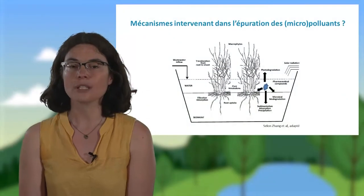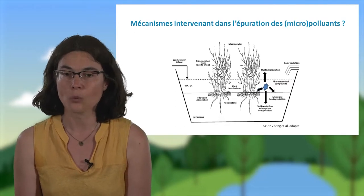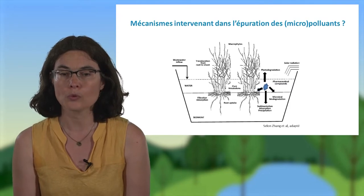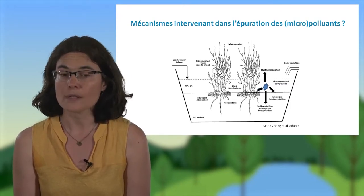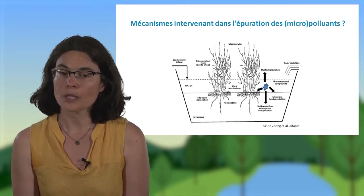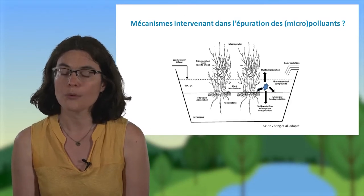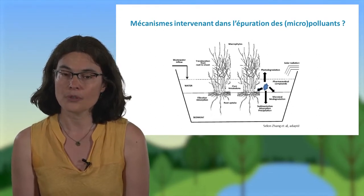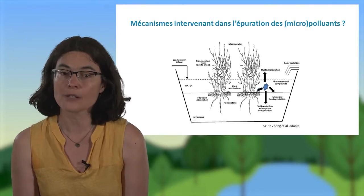Malgré tout, il reste encore certaines zones d'ombre concernant le fonctionnement de ces zones de rejet végétalisées. Par exemple, les mécanismes intervenant dans l'élimination des polluants, et des micro-polluants particulièrement, sont assez peu maîtrisés, notamment la part de chacun : sédimentation, absorption par les végétaux, photodégradation, etc. Le rôle des plantes dans ces systèmes est mal maîtrisé. Les risques en cas d'infiltration et de transfert de la pollution vers les nappes sont également peu connus. Concernant les micro-polluants, les sous-produits de dégradation et les risques associés sont peu maîtrisés.